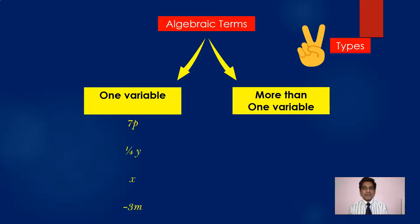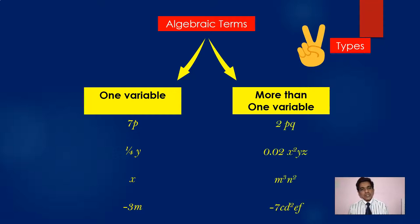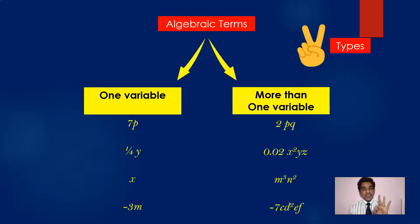Have a look at these examples: 7p, 1/4y, x, minus 3m — these have only one variable each. 7p has only p; minus 3m has only m. Now some terms may have more than one variable — for example, 2pq has two variables p and q, meaning 2 into p into q. And 0.02x²yz has three variables: x, y, and z.